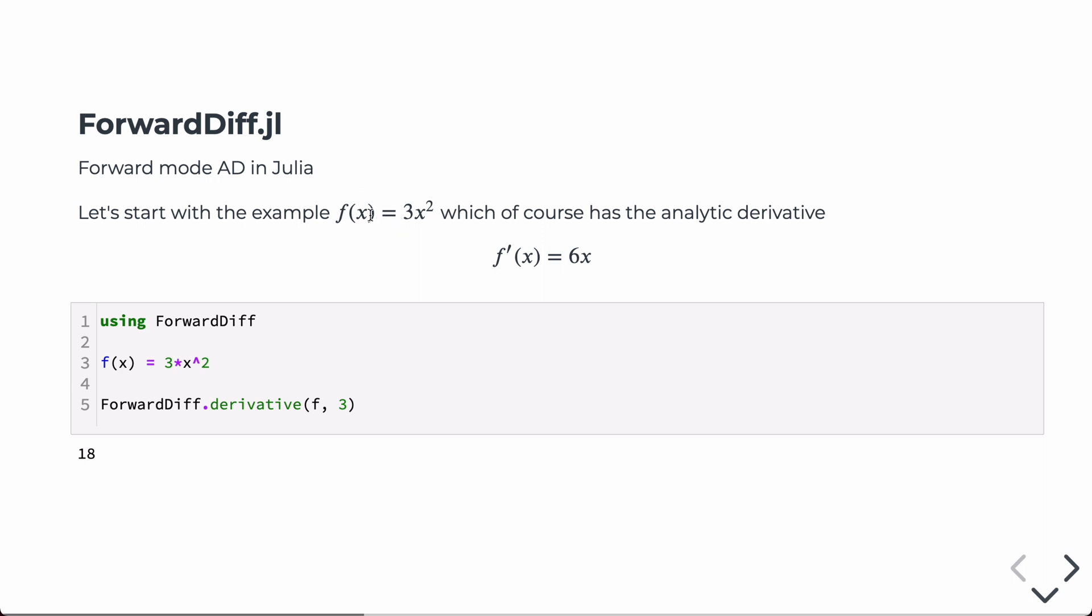So we'll start with just a simple function, define a function 3 times x squared. Of course, we know this has an analytic derivative that we can compute easily. So the derivative of this is 6 times x. We can define this function in Julia, 3x squared, like so. And then the forward diff syntax for computing the derivative of it is simply to pass in the function, the callable f, and the value of x where you want to compute the derivative. So in this case, the value is 3, 3 times 6 is 18. And so you can see this computes the derivative correctly.